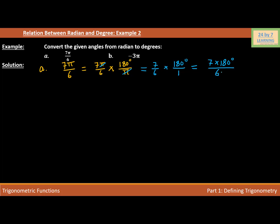I suggest you pause the video and use your calculator to multiply 7 times 180 and then divide by 6. If we multiply 7 times 180, we get 1260 degrees over 6. Dividing 1260 by 6, we get 210 degrees. So 7π/6 is equal to 210 degrees.